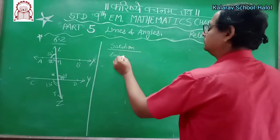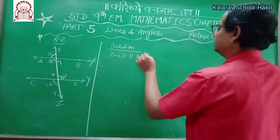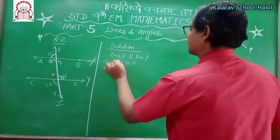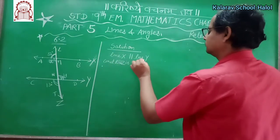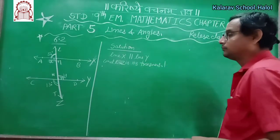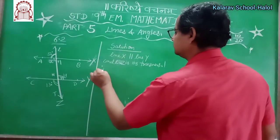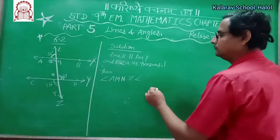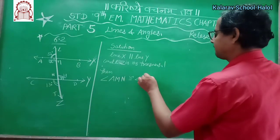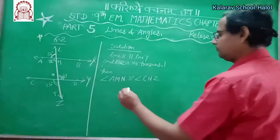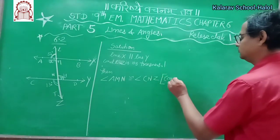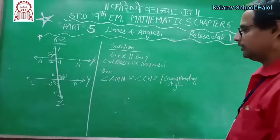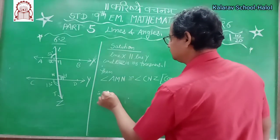Line X is parallel to line Y, and Z is its transversal. If it is a transversal, then angle AMN is congruent to angle CNT — these are alternate interior angles.